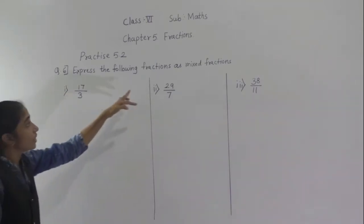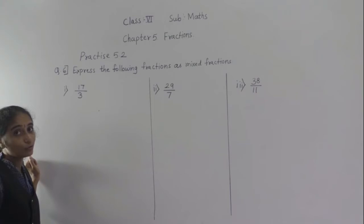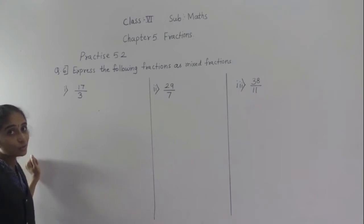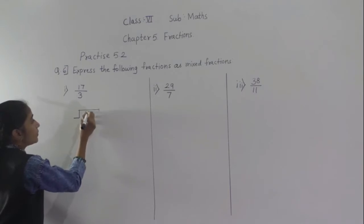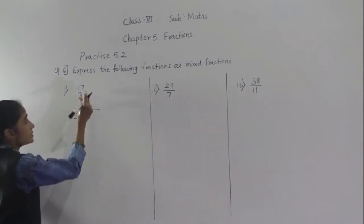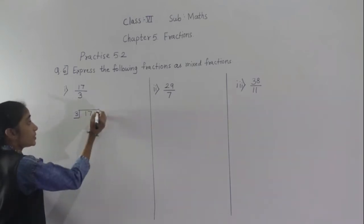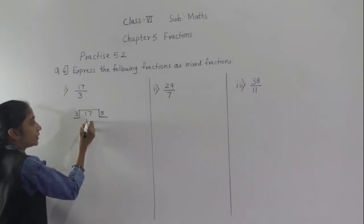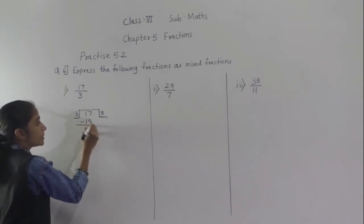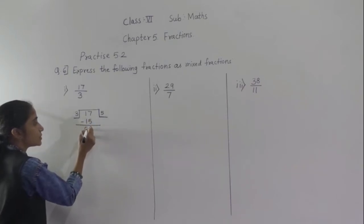So we are going to convert the improper fraction into a mixed fraction. What we are going to do for that? We are going to divide: 17 divided by 3. Now do the division. 3 fives are 15, remainder 2.